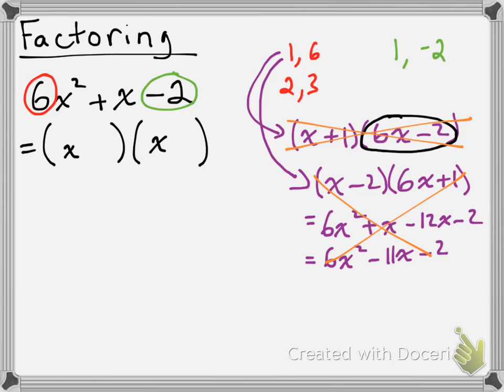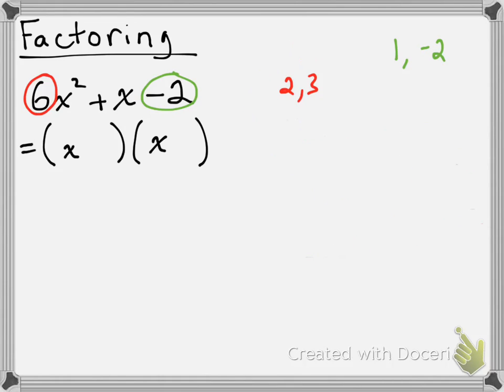Now, since we've tried both possibilities with the coefficients of x being 1 and 6, we are going to reject that as a possibility entirely, and we're going to deal just with the 2 and the 3. So let's try the 2 and the 3. That's going to give us 2x plus 1 times 3x minus 2. Let's see what happens from here.